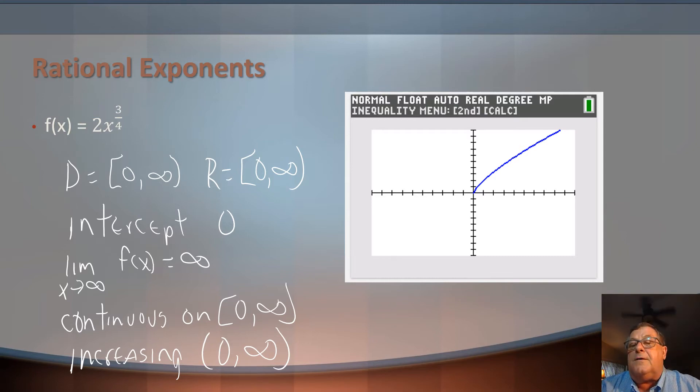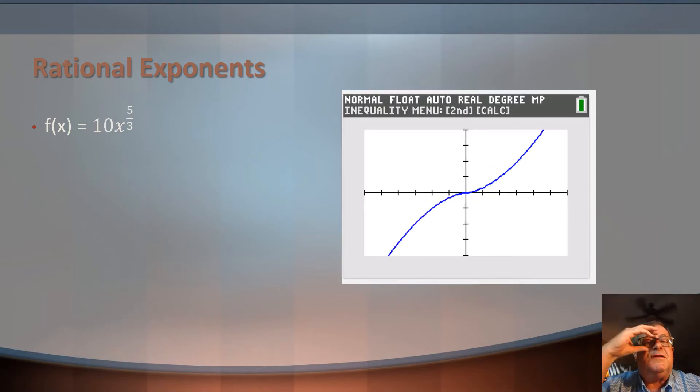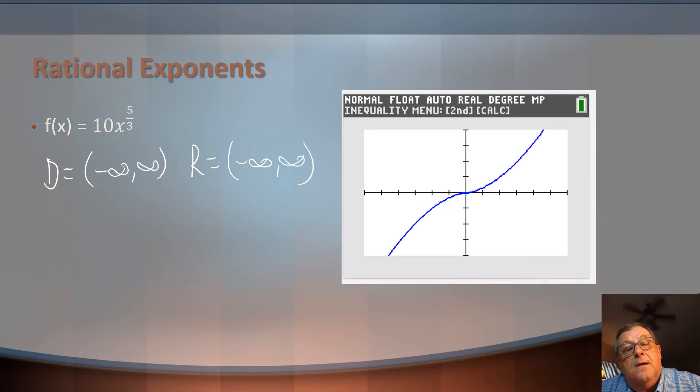All right, let's take a look at the second graph. Now, let's look at the second function, which is 10 times x raised to the power of 5 thirds. So the domain, well, I don't see any restriction on the domain. It's going from negative infinity out to infinity. And the range, I also don't see any restriction. So it's negative infinity out to infinity. And like the other one, I do have some intercepts, but they're at the origin. So both the x and y intercepts are at 0.